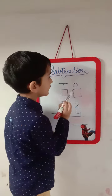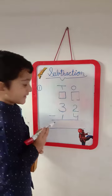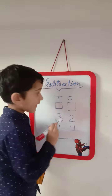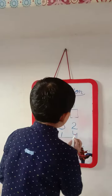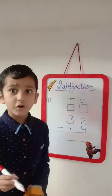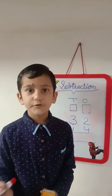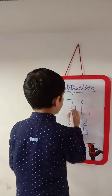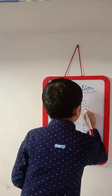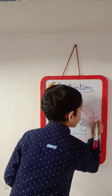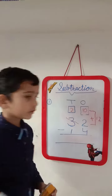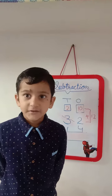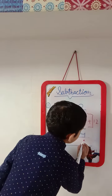First we will write the place values. Now we will subtract 14 from 32. First we will subtract in the ones place. We cannot subtract 4 from 2 because 2 is less than 4. So we will borrow from 3. 3 will become 2 and 2 will become 12. 12 minus 4 is equal to 8, so we will write 8.